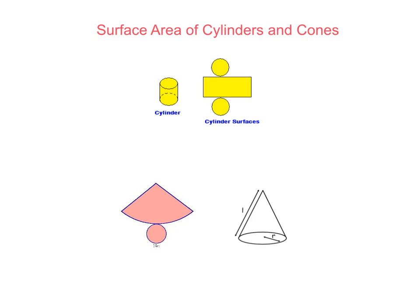In this lesson we're going to learn about the surface area of cylinders and cones. The first one is a cylinder — here is the 3D picture of a cylinder, and over on the right is the net of a cylinder. A net is what it would look like if it were flattened out, or if you took it apart and saw the shapes. A net is 2D, and it helps us find the surface area because we can see the shapes that it makes.